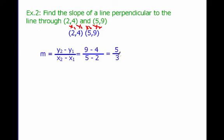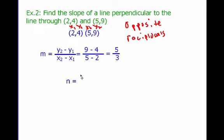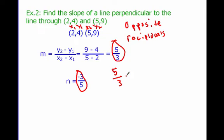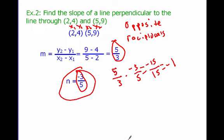Now I need to find the slope of the line perpendicular to this. We know they are opposite reciprocals of each other. I'll call my second slope n — it's going to be negative because the original is positive, and then we flip it: 3 goes on top, 5 goes on the bottom, so n equals negative 3 fifths. I can check: 5 thirds times negative 3 fifths equals negative 15 over positive 15, which equals negative 1. So n equals negative 3 fifths.